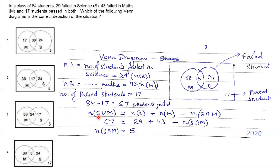Using set theory, N(A ∪ B) = N(A) + N(B) − N(A ∩ B). Here N(S) is the number of students failed in science and N(M) is failed in maths. So N(S ∪ M) = N(S) + N(M) − N(S ∩ M). The union represents the total number of students who failed, which is 67. With N(S) = 29 and N(M) = 43, after calculating we find N(S ∩ M) = 5. These 5 students failed in both maths and science.